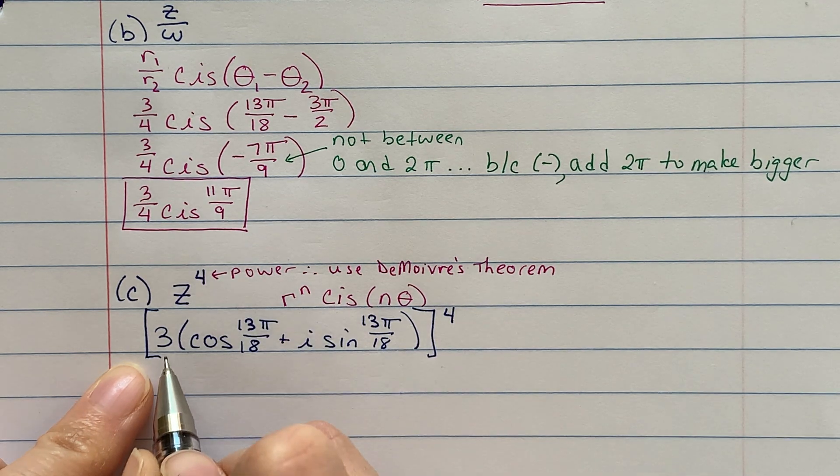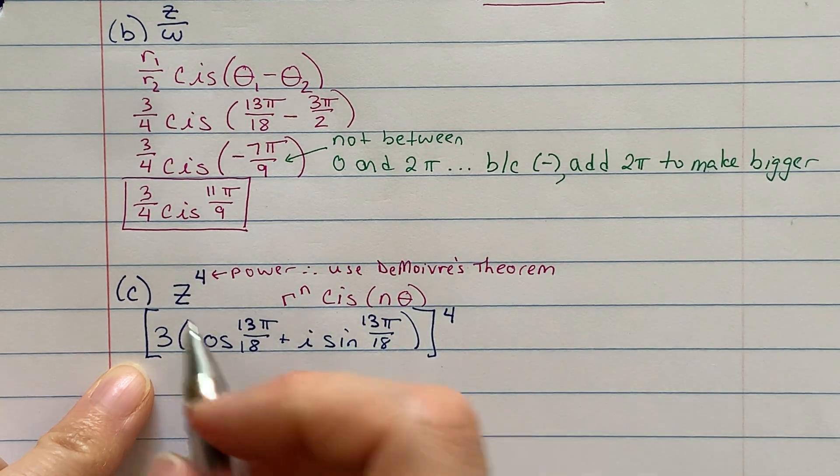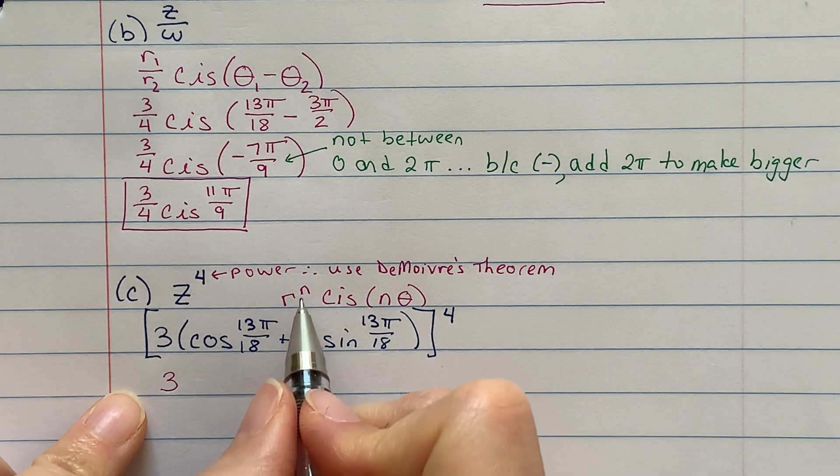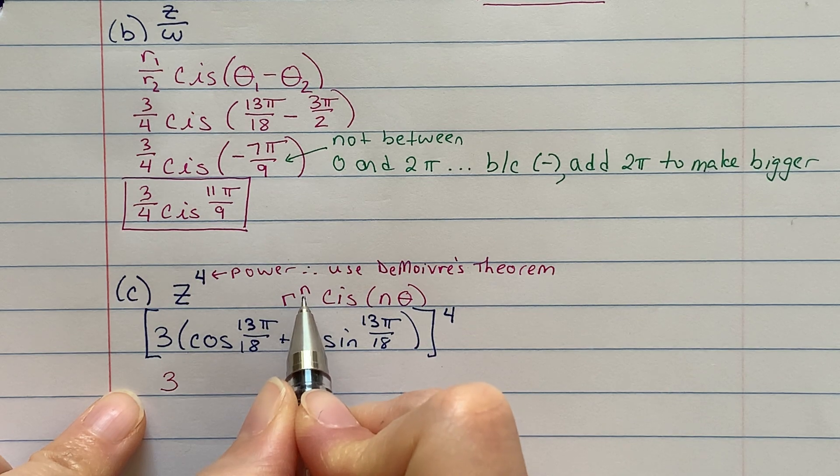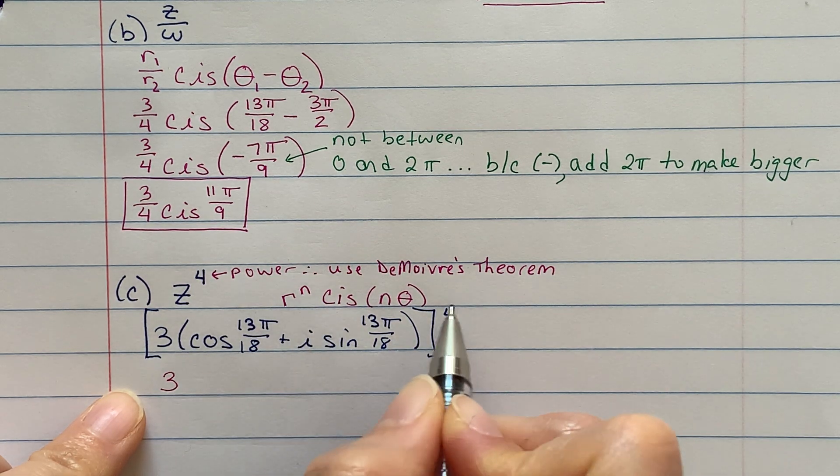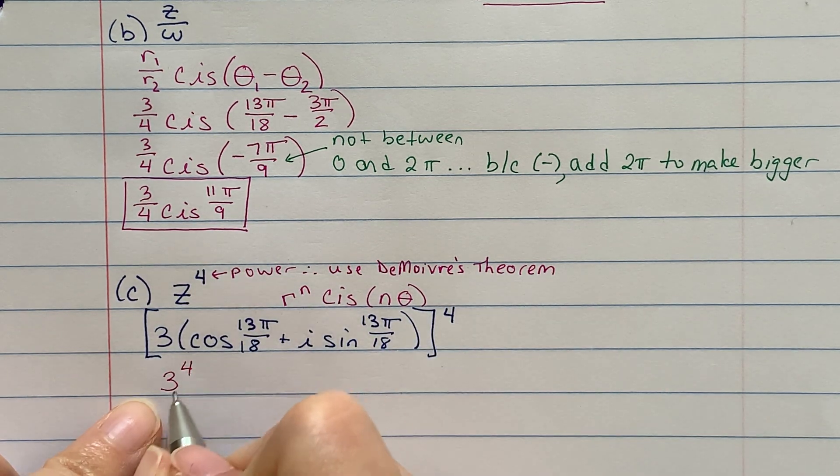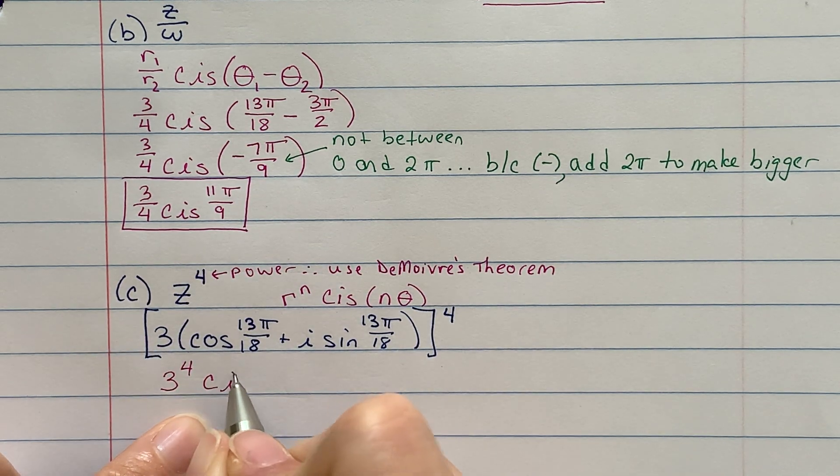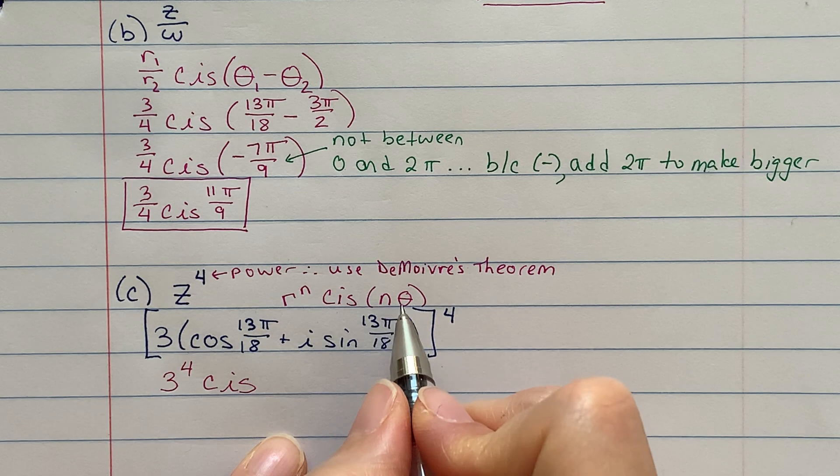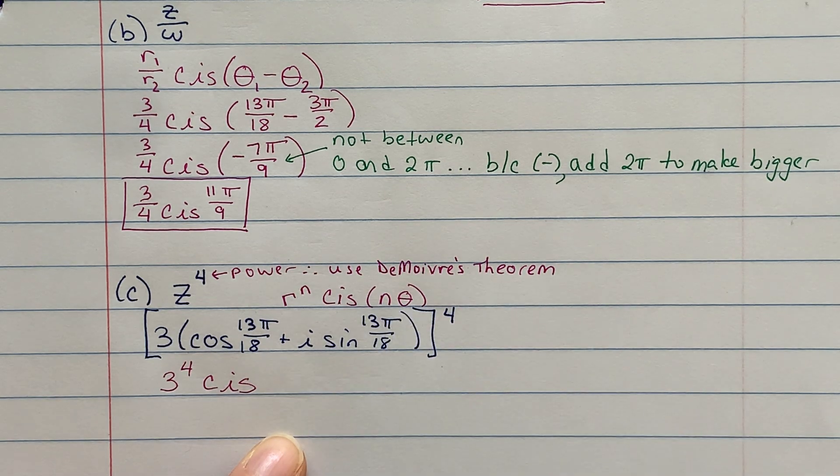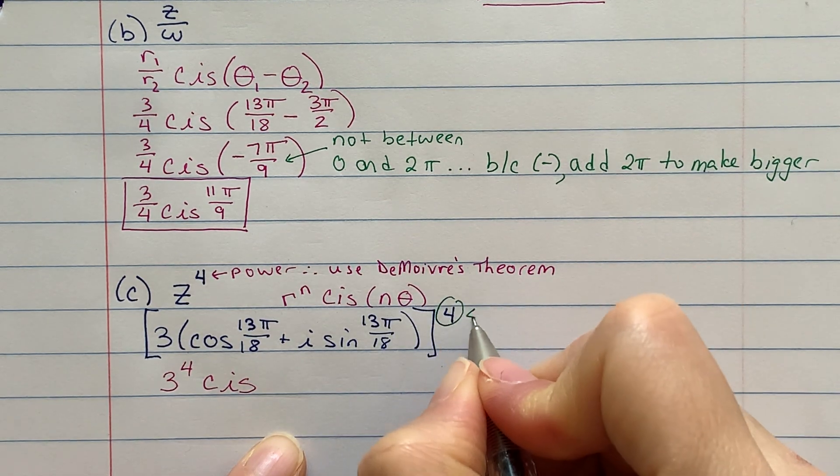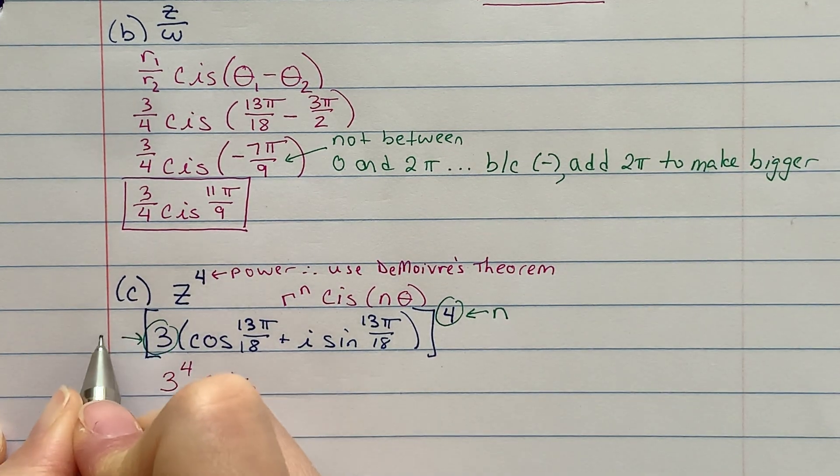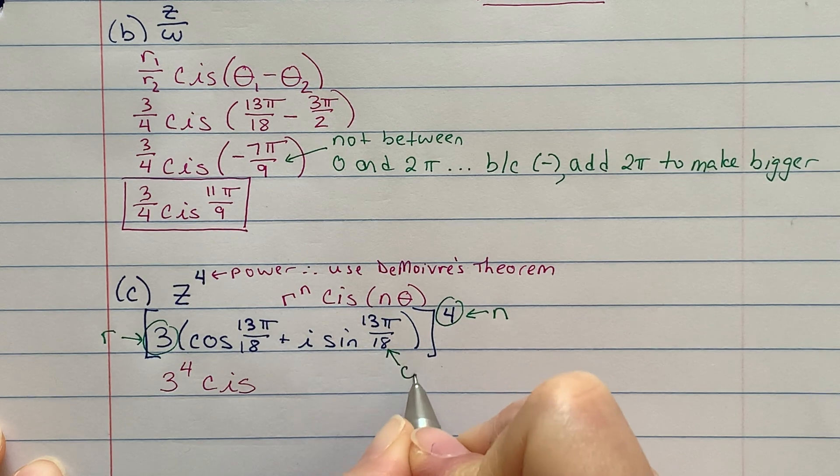So it says to take R to the nth. Well, I know R is the number three, right? R is this number three. So I've got three. What do you suppose N is? N is the power. In this case, the power is four. So it's three to the fourth. Cis. And then I do N times theta. So again, this power, this is N. And this number in front, that's your R. And this number here, that's your theta.